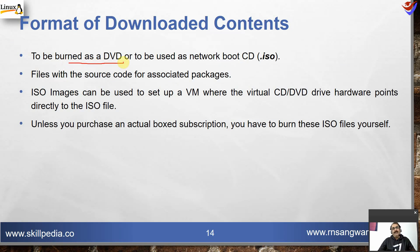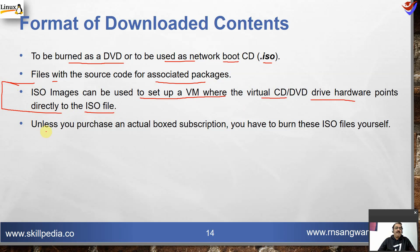Format of downloaded content: it can be burned as a DVD, or used as a network boot CD. ISO files contain source code for associated packages. ISO images can be used to set up a VM where the virtual CD or DVD drive points directly to the ISO file — we will use this in our Oracle VirtualBox installation. Unless you purchase an actual box subscription, you have to burn these ISOs yourself.